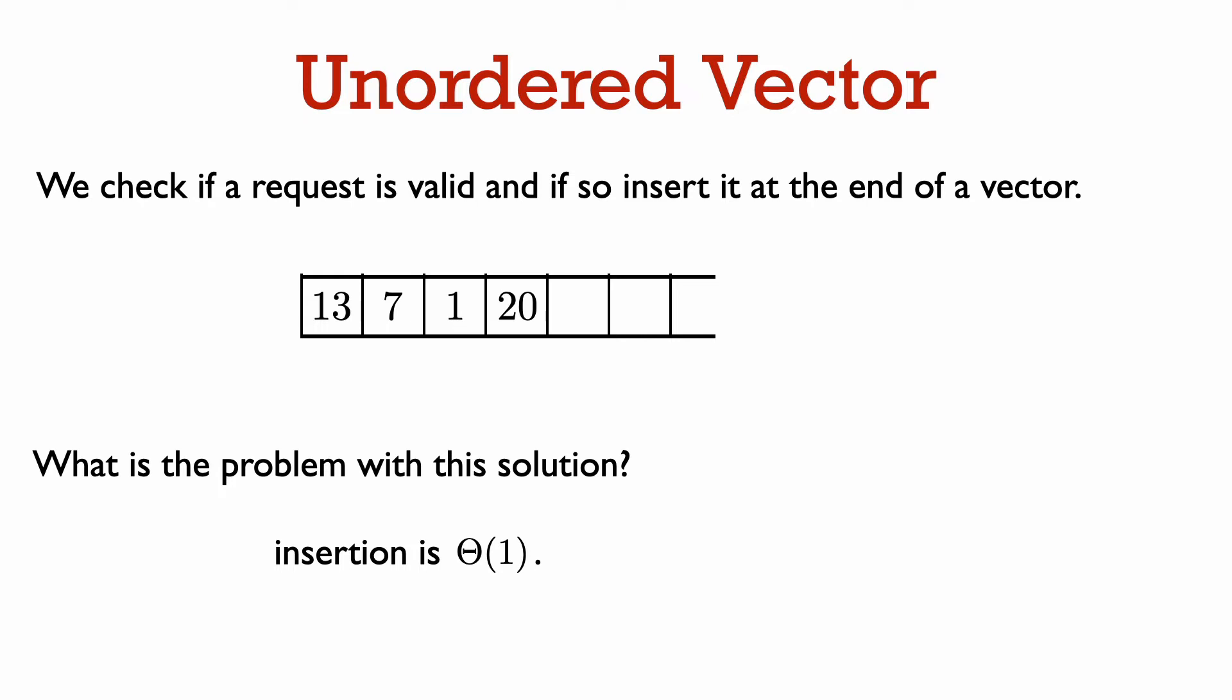How about verifying that the constraint is satisfied? This is slow. To do this, we have to step through each element of the vector one by one to verify that the requested landing time is not too close to an already scheduled landing time. If there are n elements in our vector, then this will take time Θ(n). We will take at least time n in the worst case, because we have to check all n elements of our vector. Thus, this is not a very good solution.